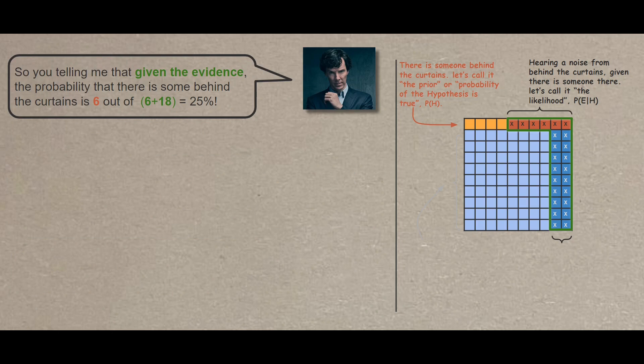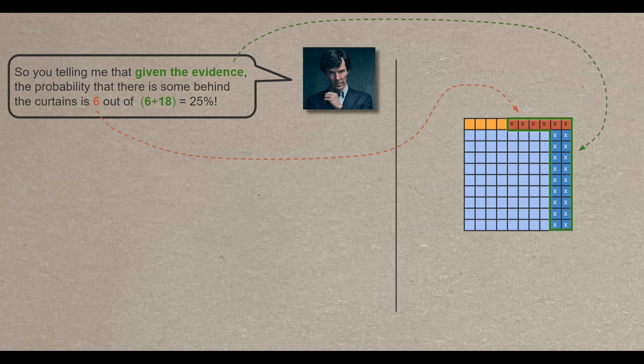So you're telling me, given the evidence, the probability that there is someone behind the curtains is 6 out of 24, which equals 25%. Now, since we experienced the evidence, meaning that we heard the noise from behind the curtain, we will count all the X's regardless of whether the theory is right or wrong. We get 24 X's. 6 X's of these 24 represent that the theory is correct, meaning that there is someone behind the curtains. And 18 out of these 24 represent that the theory is wrong. There is no one behind the curtains.